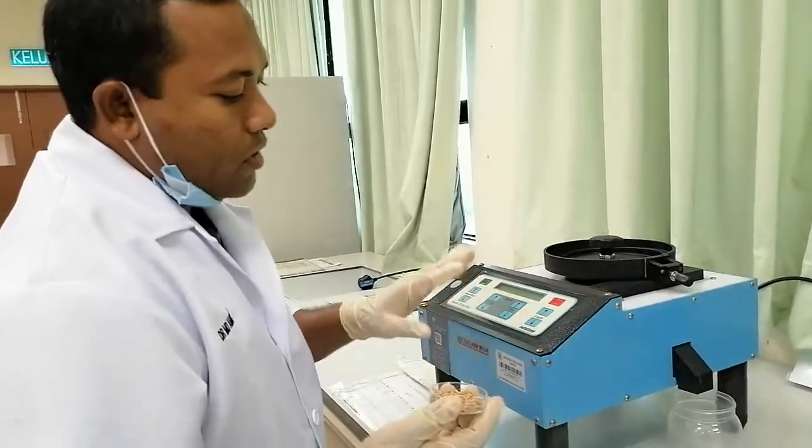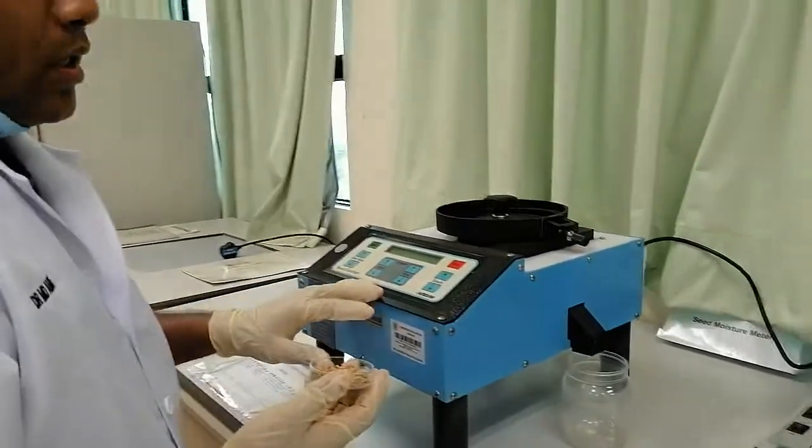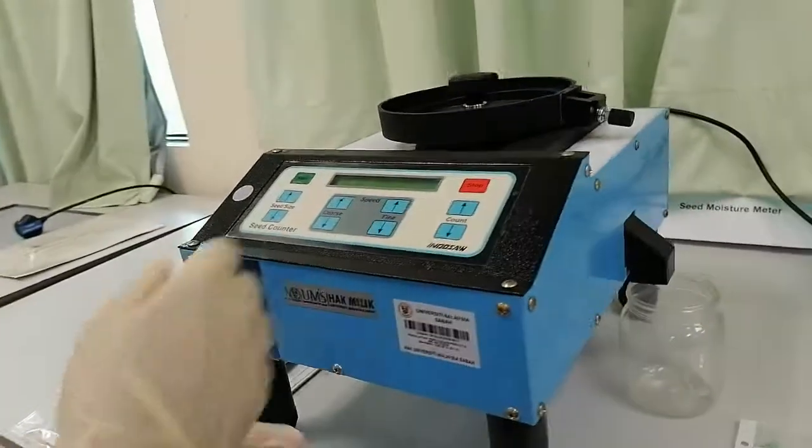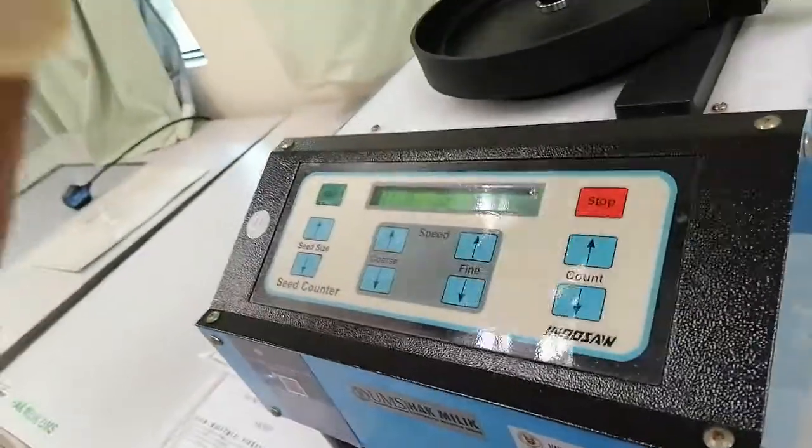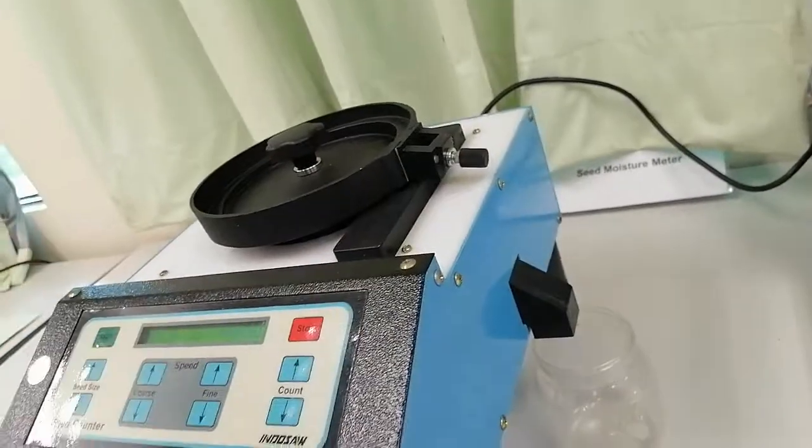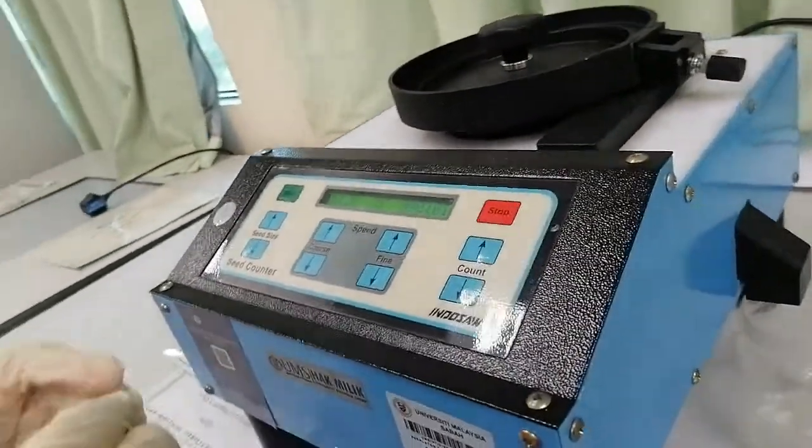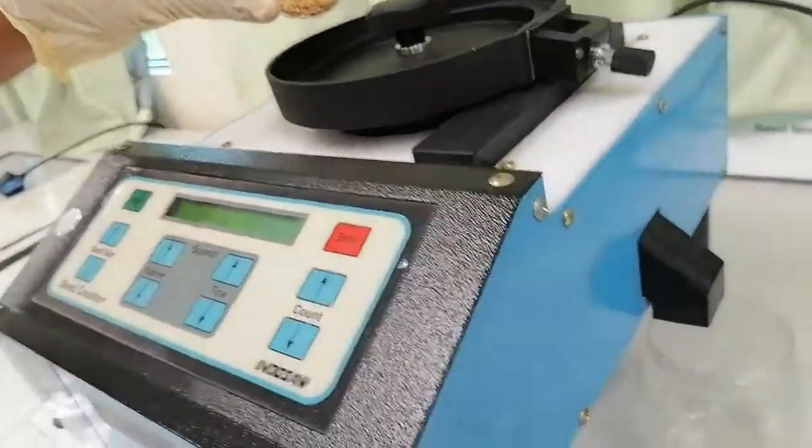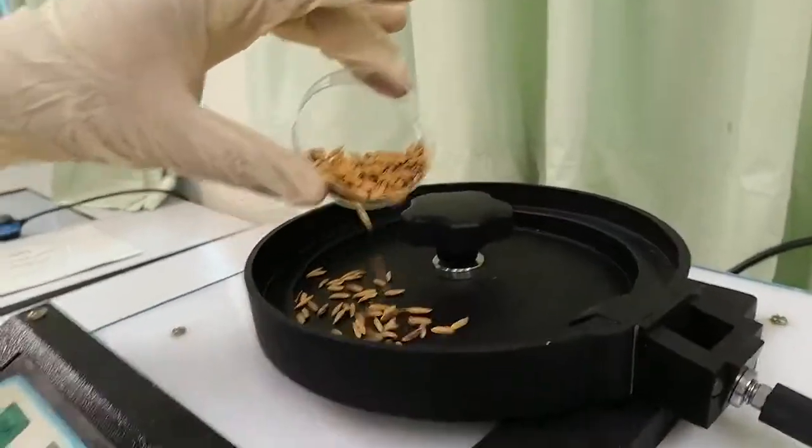So for that purpose there is a machine seed counter, electric seed counter you can see. There is a power cable already connected with the power. So this is the on off button. Before we turn it on, we can keep some seed here. So this is the inlet.